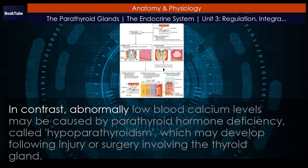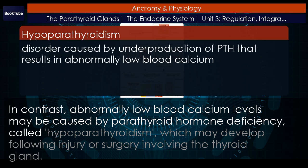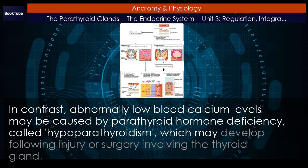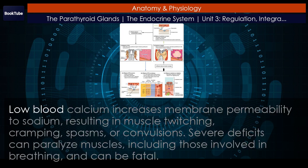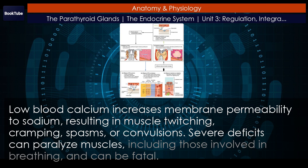In contrast, abnormally low blood calcium levels may be caused by parathyroid hormone deficiency, called hypoparathyroidism, which may develop following injury or surgery involving the thyroid gland. Low blood calcium increases membrane permeability to sodium, resulting in muscle twitching, cramping, spasms, or convulsions. Severe deficits can paralyze muscles, including those involved in breathing, and can be fatal.